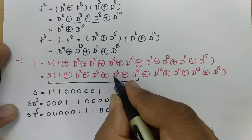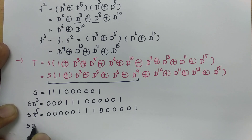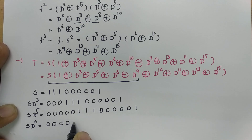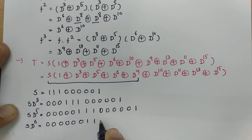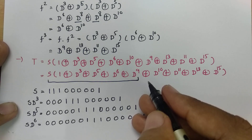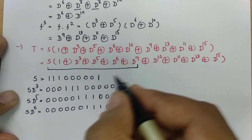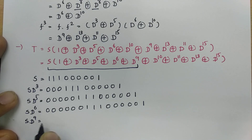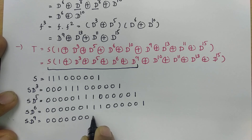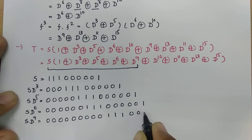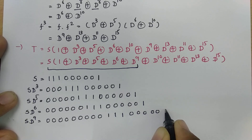Then d⁶ is there, so s·d⁶ means there are 6 zeros padding, then the s stream: 000000, triple 1, five times 0, and 1. And for d⁹, there is a padding of 9 zeros, so s·d⁹ is: 9 zeros, then the stream: triple 1, five times 0, and 1.